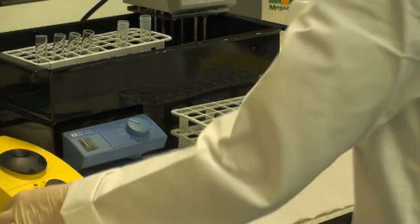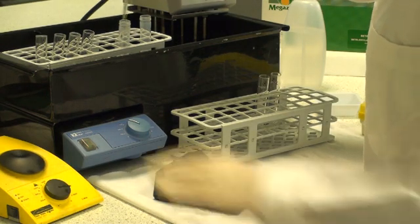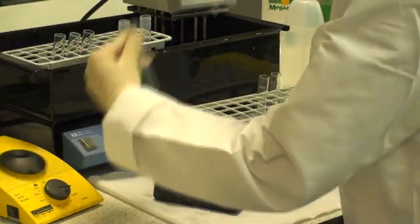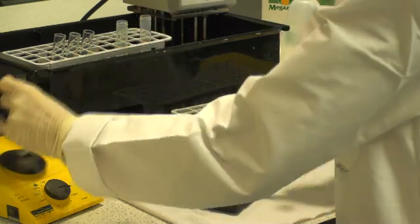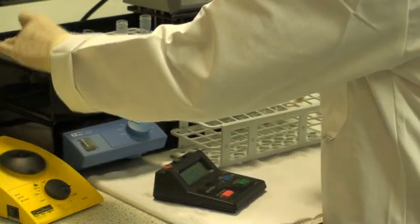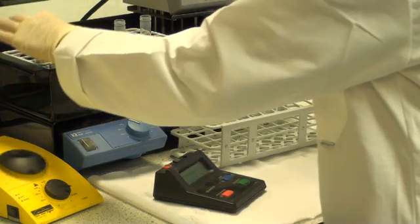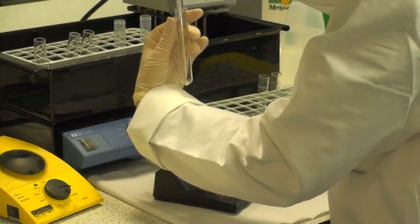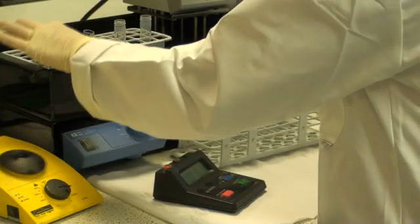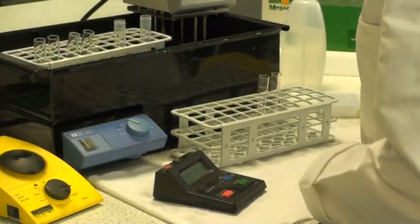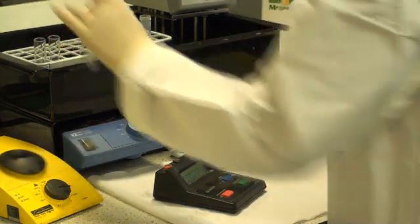Initiate the reaction by adding 0.2ml of diluted malt or barley extract to the substrate solution pre-equilibrated. Be careful to add this to the bottom of the test tube so that all of the enzyme preparation comes in contact with the substrate. Each sample is assayed in duplicate, and these reactions are allowed to proceed for exactly 10 minutes before the termination of the reaction.